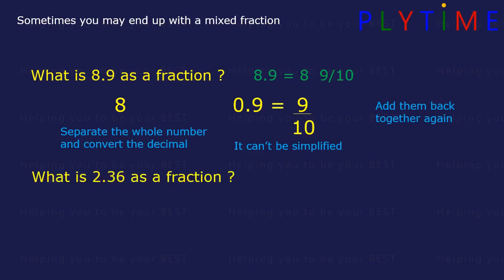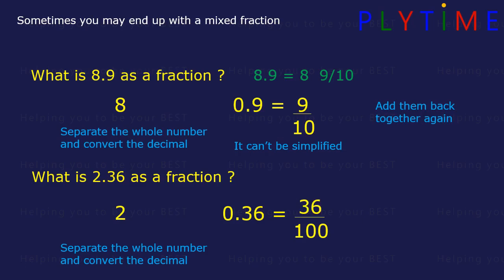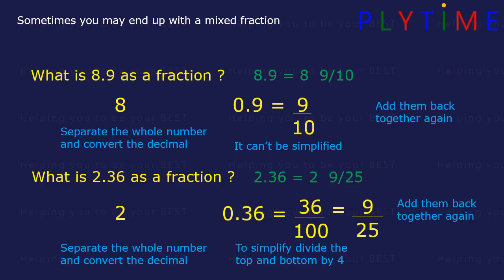What's 2.36 as a fraction? Separate the whole number and convert the decimal. So we have 2, and this time we have 0.36. So it's going to be out of 100. 36 out of 100. We can simplify by dividing both the top and bottom by 4. 100 divided by 4 is 25, and 36 divided by 4 is 9. Now put the two numbers back together. 2.36 is the same as 2 and 9 over 25.